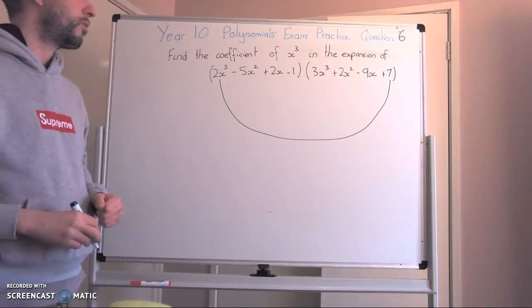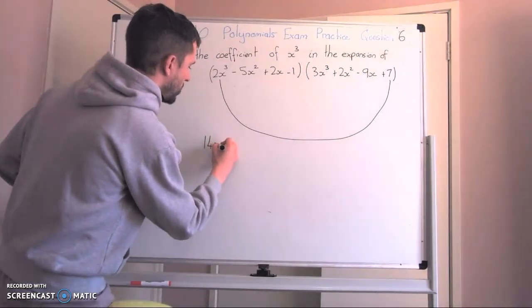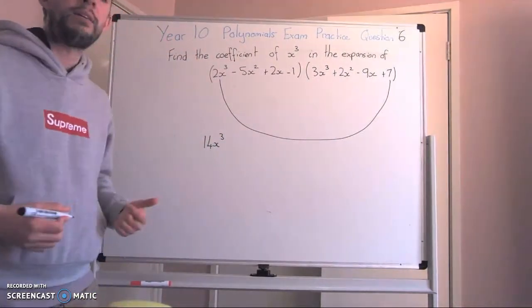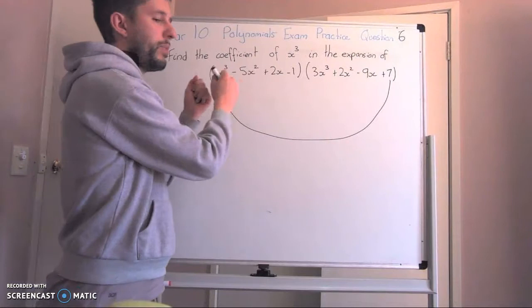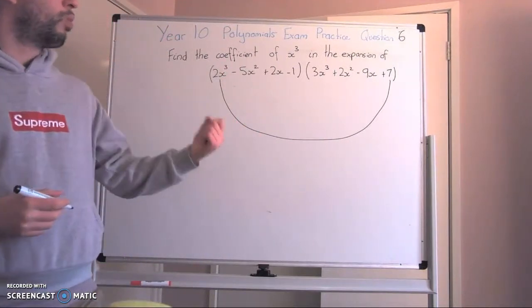So 2x³ times 7 is 14x³. So we don't have to get it into everything in the expanded form. We can just look at what we want.